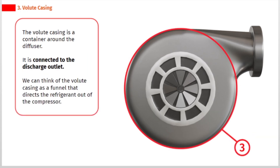The volute casing is a container around the diffuser. It is connected to the discharge outlet. We can think of the volute casing as a funnel that directs the refrigerant out of the compressor.